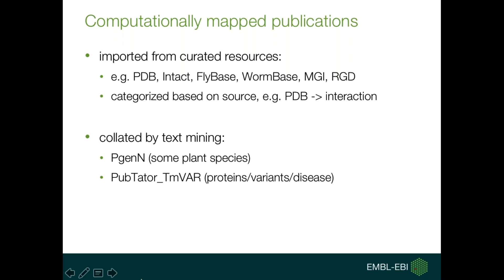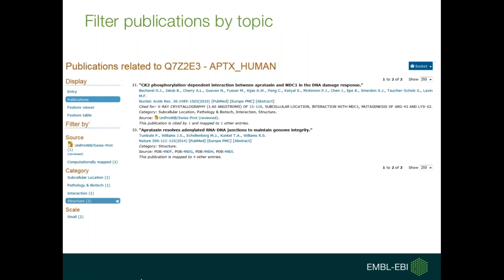Based on their source — PDB, for example — these papers can then be put in boxes and labeled. PDB would get the label '3D structure' because that's what PDB deals with. The second way of computationally mapping publications is by text mining. We have two very conservative approaches: one is for a small set of plant species, and another one deals exclusively with variants in disease in proteins. All the results from these text mining approaches are filtered and applied very conservatively, so as to avoid false positives.